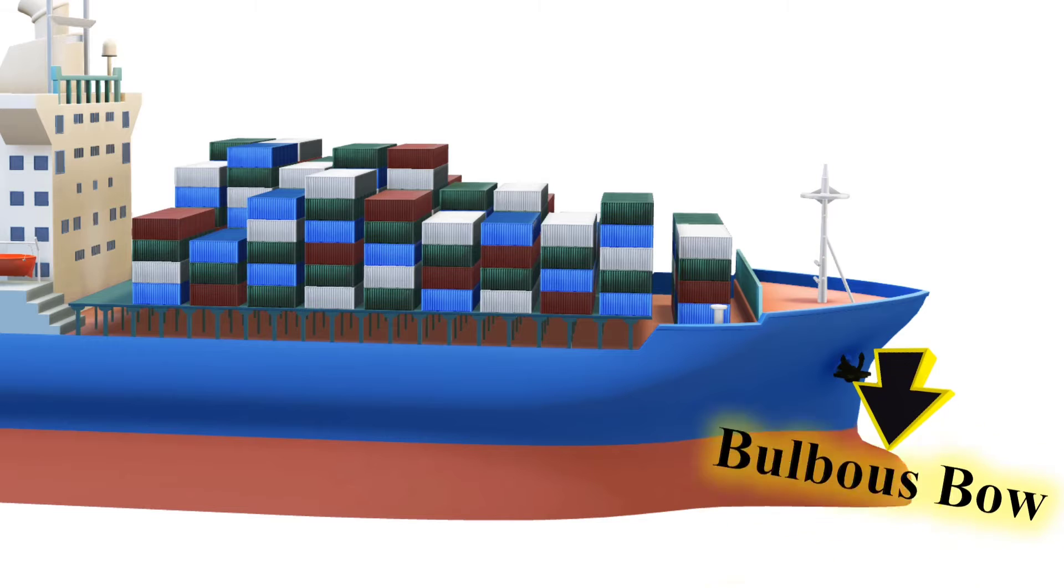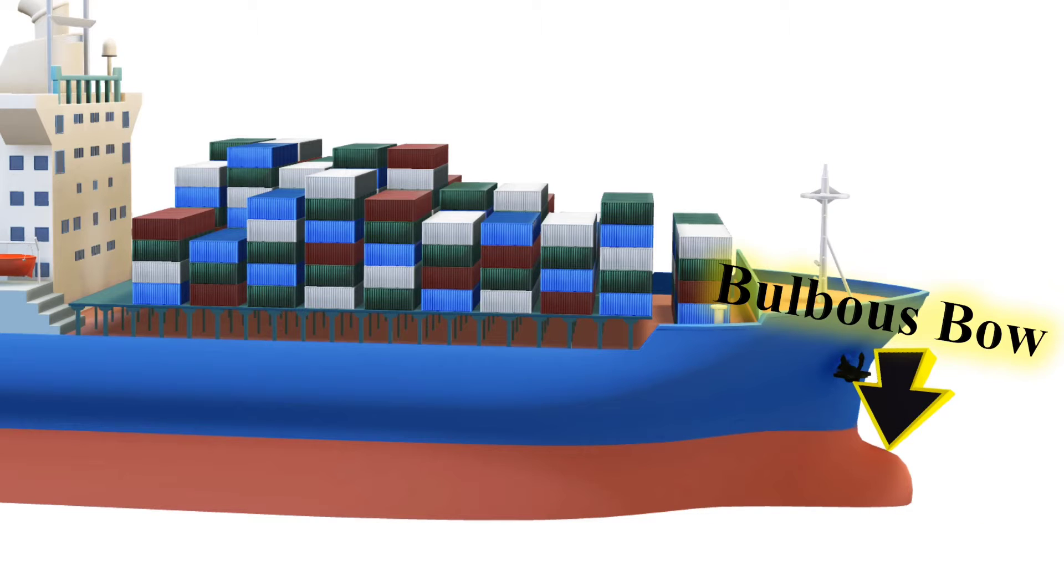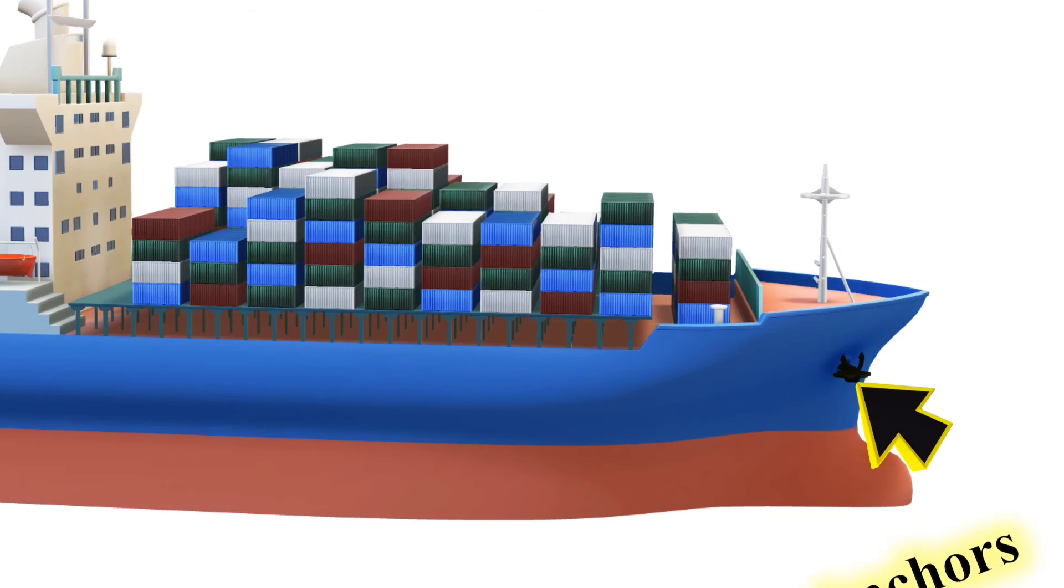Bulbous bow, a bulb-shaped projection at the ship's bow to improve hydrodynamics. Anchor, a heavy device used to secure the ship to the seabed.